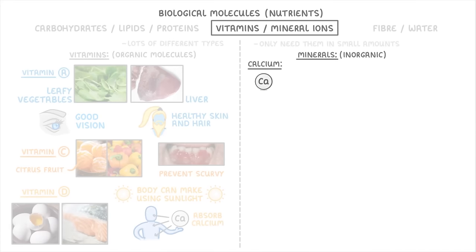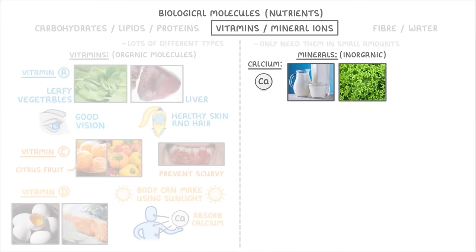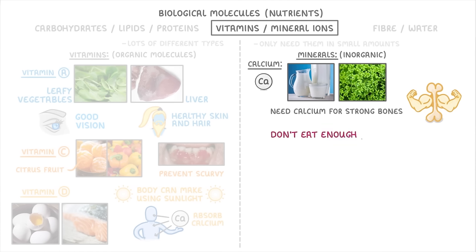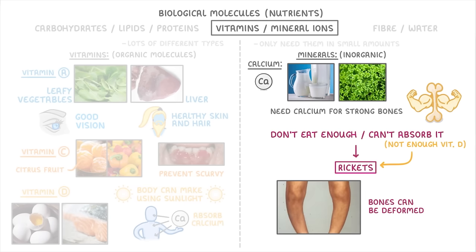Calcium itself is actually an example of a mineral ion and is found in dairy products like milk as well as leafy vegetables. You need calcium for strong bones, and so if you don't eat enough calcium or you can't absorb it because you don't have enough vitamin D, then it could lead to a condition like rickets where your bones can be deformed.